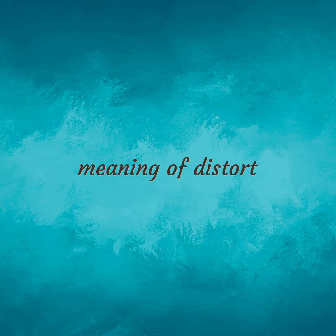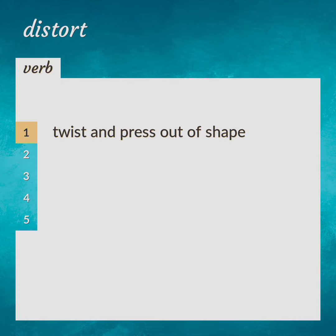Meaning of distort. Twist and press out of shape. Contort, deform, ring.